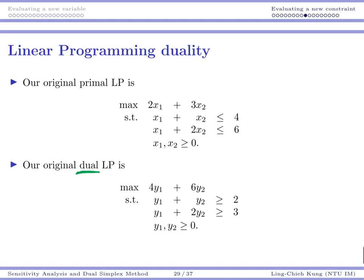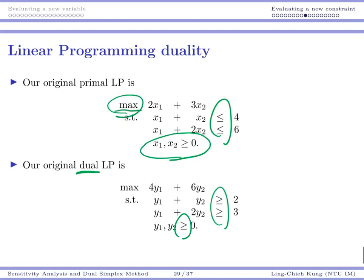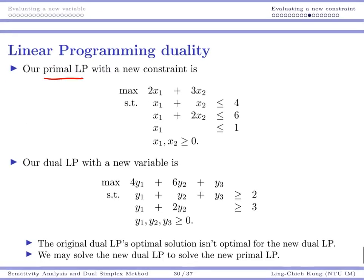We have non-negative variables because our maximization primal has less-than-or-equal-to constraints, and greater-than-or-equal-to constraints in the dual because the x variables are non-negative. Note: there is a typo — it should be a minimization problem. So this is our dual linear program. Now, if our primal has a new constraint, when converted to the dual it will have a new variable.